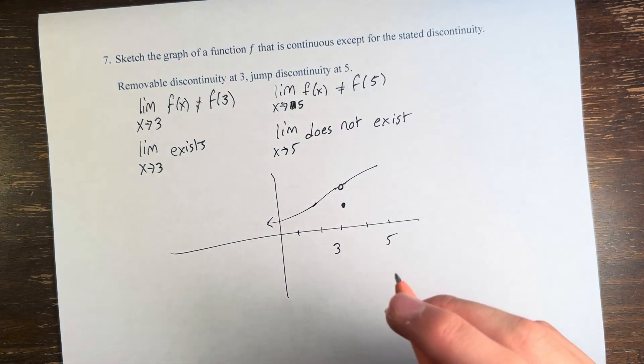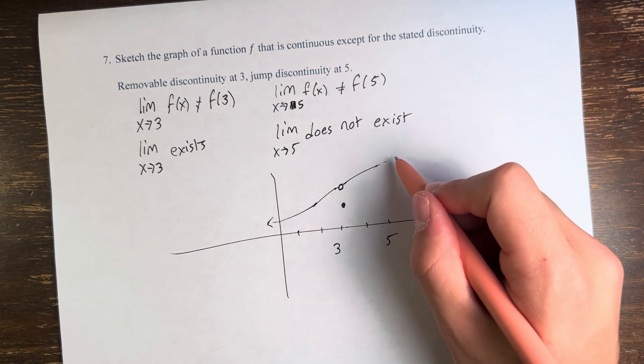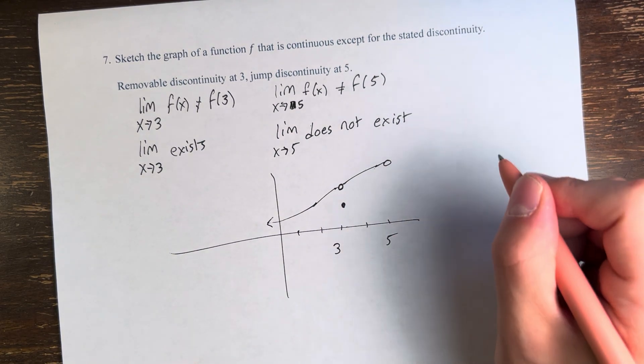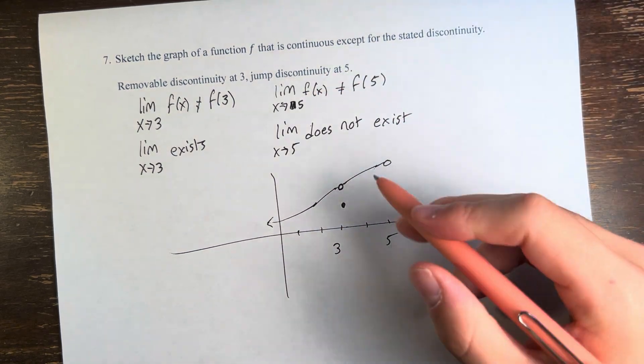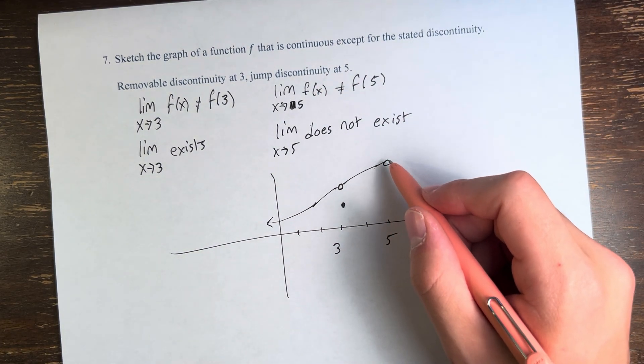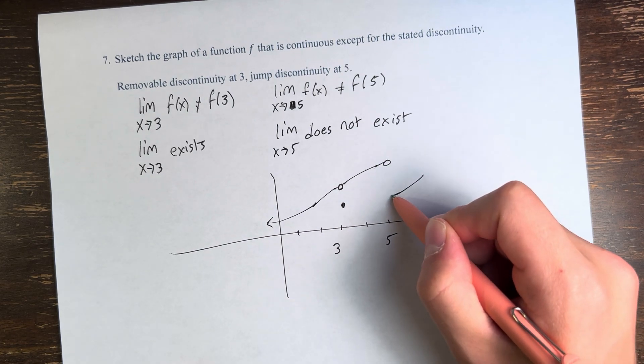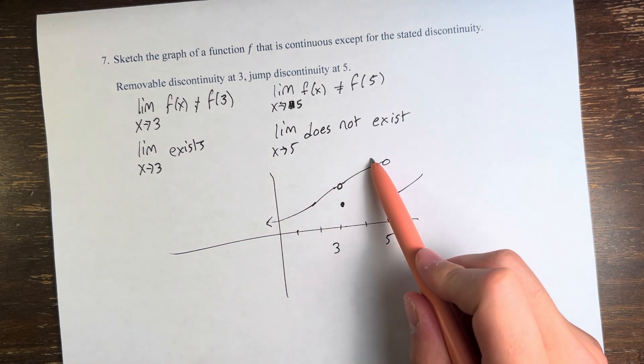And then at 5, not only does the value of the function not equal the limit, it jumps in value. It's a different value from the left and the right, and therefore it's called a jump discontinuity. That's what it means for the limit to not exist. The value is jumping down.